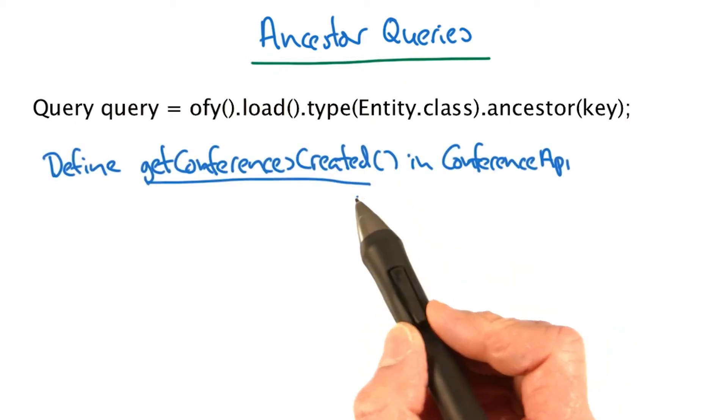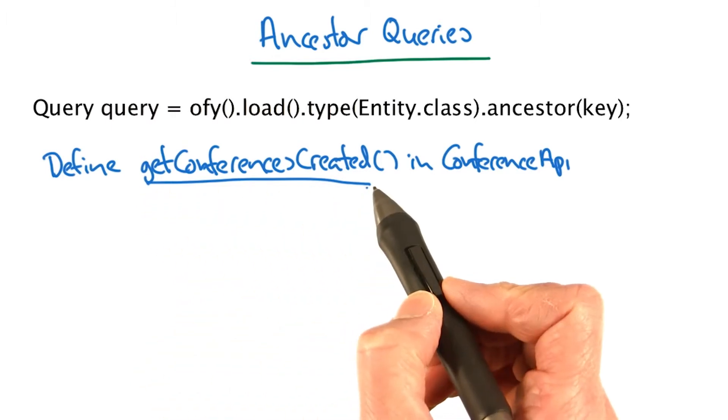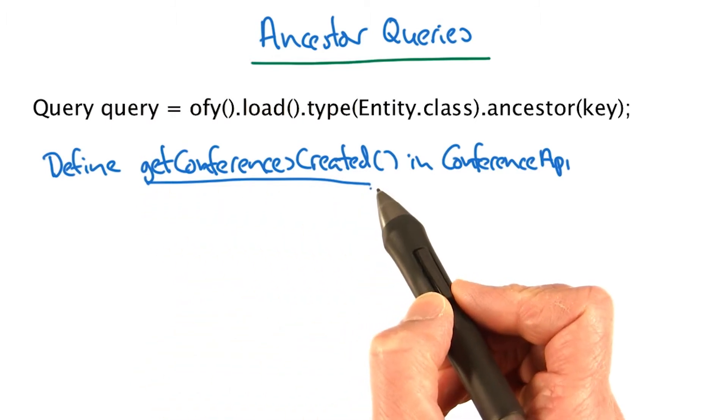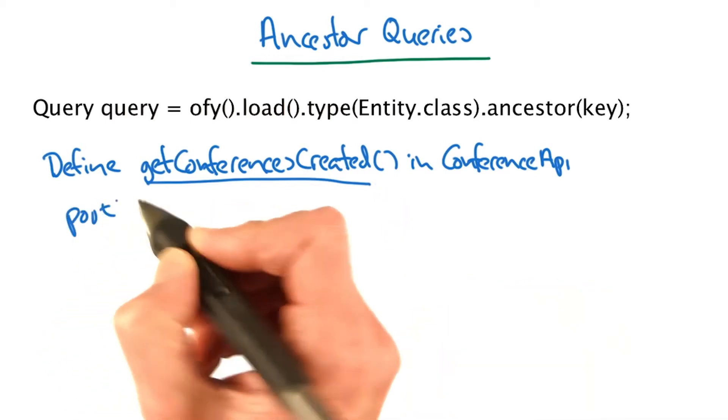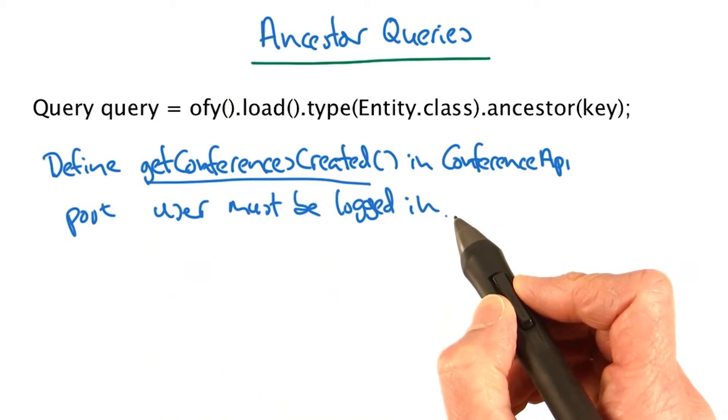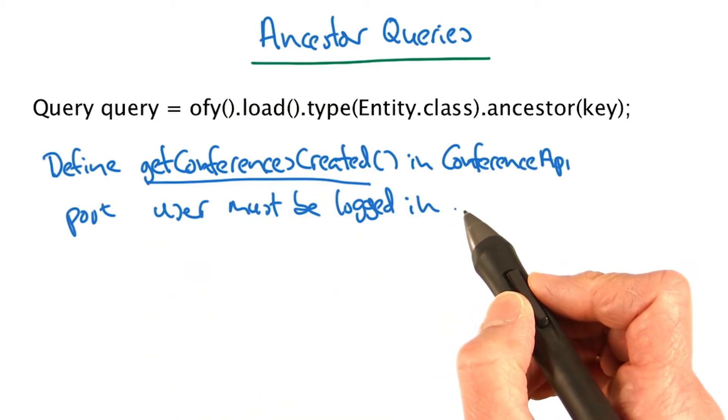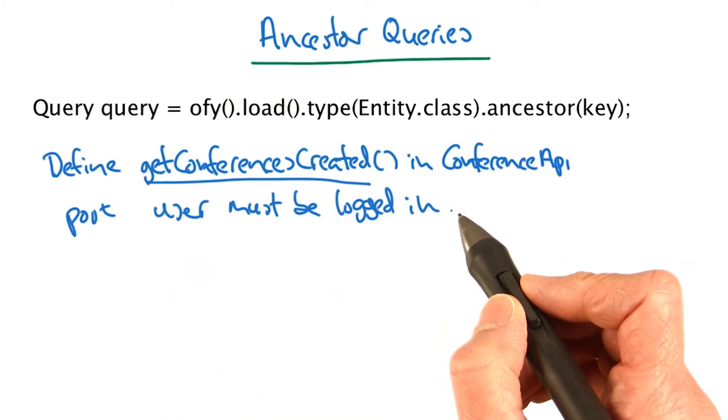So go ahead and add a new function in conference API called getConferencesCreated that returns conferences created by the logged in user. The HTTP method is going to be post. And this time, the user must be logged in because you're trying to get the conferences created by the logged in user.